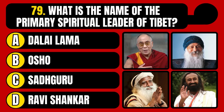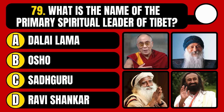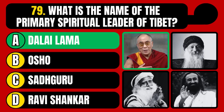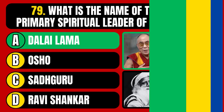What is the name of the primary spiritual leader of Tibet? Dalai Lama, Osho, Sadhguru, or Ravi Shankar? The correct answer is option A, Dalai Lama.